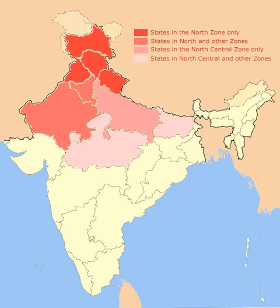The Tropic of Cancer, which divides the temperate zone from the tropical zone in the Northern Hemisphere, runs through India, and could theoretically be regarded as a geographical dividing line in the country. Indian states that are entirely above the Tropic of Cancer are Jammu and Kashmir, Himachal Pradesh, Punjab, Haryana, Delhi, Uttarakhand, Uttar Pradesh and Bihar, and most of North East Indian states.